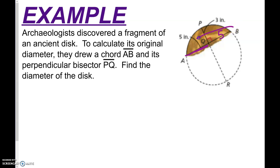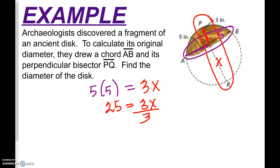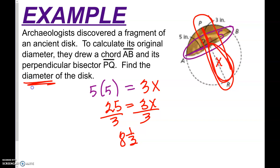We take one chord and do part times part. So we do 5 times 5, which equals 25, and that has to equal the other chord. We know one part of that chord is 3 and we don't know the other part, so we call it x. So 25 equals 3x; divide both sides by 3 and x equals 8 and 1/3. Since they're asking for the whole diameter, we add 3 plus 8 and 1/3, giving a diameter of 11 and 1/3 inches.